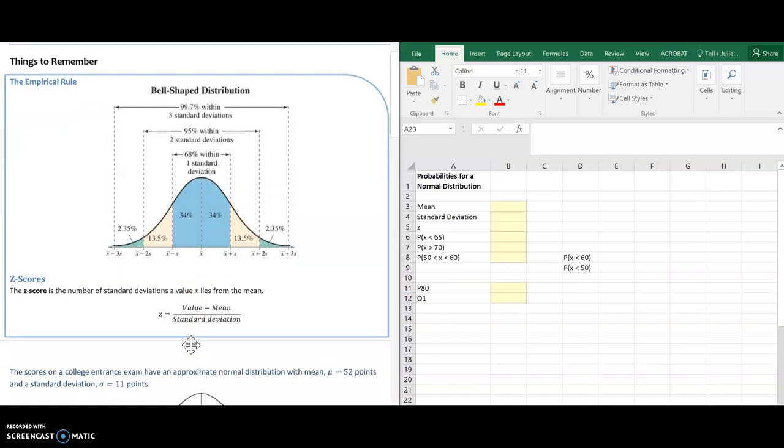For our first example, the scores on a college entrance exam have an approximate normal distribution with mean mu equals 52 points, and a standard deviation sigma equals 11 points.